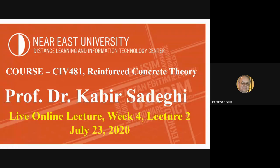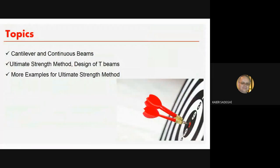In the next slide you'll see the topics of today's lecture. We review the conditions and some technical specifications for cantilever and continuous beams. For example, for a simple support beam, the reinforcement is at the bottom of the section at mid-span, but for a cantilever it is inverted because we have a negative moment at the support. For a continuous beam, we have positive moments at mid-spans and negative moments at supports, so reinforcement at mid-span is at the bottom but at the support it is at the top.